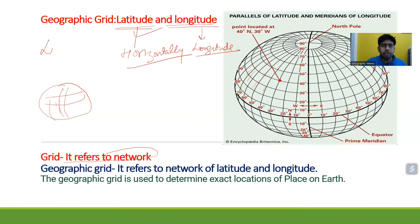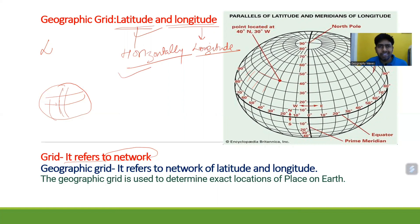Latitude is an imaginary line that runs horizontally on the globe. Longitude is an imaginary line that runs vertically on the globe. The network of latitude and longitude is known as the geographic grid, and the geographic grid is used to determine the exact location of a place on Earth.